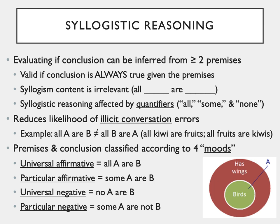The content of syllogisms is irrelevant. "All blank are blank" could be filled with words, symbols, letters, pictures — it doesn't matter. Syllogistic reasoning is dramatically affected by quantifiers. Quantifiers are words that tell us how many in the category apply — for example, all, some, or none.